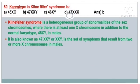The last question, number 80. The karyotype in Klinefelter syndrome is — the answer is option B: 47XXY. Klinefelter syndrome is a heterogeneous group of abnormalities of the sex chromosomes where there is at least one X chromosome in addition to the normal karyotype 46XY in males. It is also known as 47XXY or XXY. It is a set of symptoms that result from two or more X chromosomes in males.